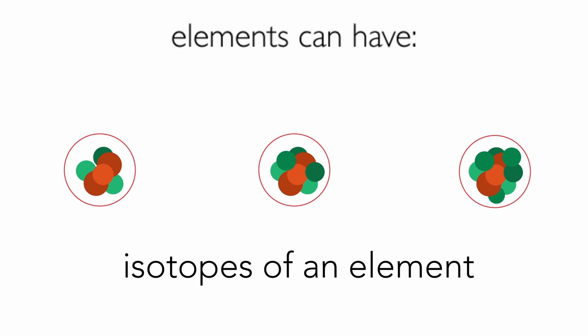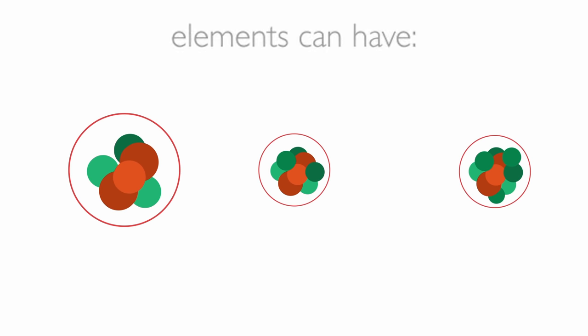Elements can exist with slightly different numbers of neutrons and we call these isotopes of an element. It is particularly common for heavier elements where a lot of neutrons are required to hold the nucleus together, but smaller and lighter examples include the isotopes of hydrogen.